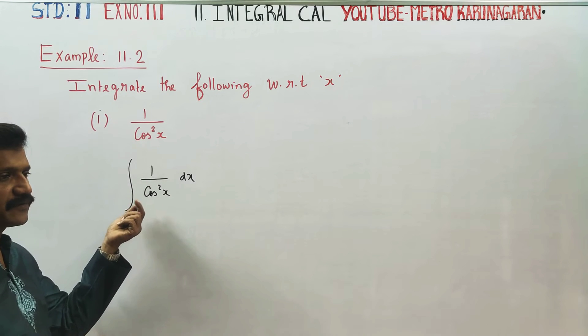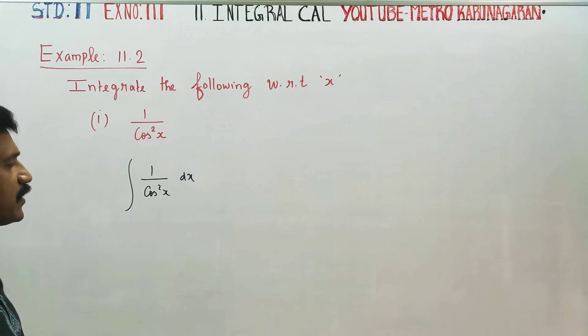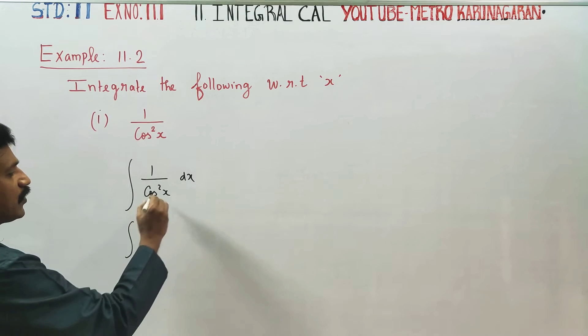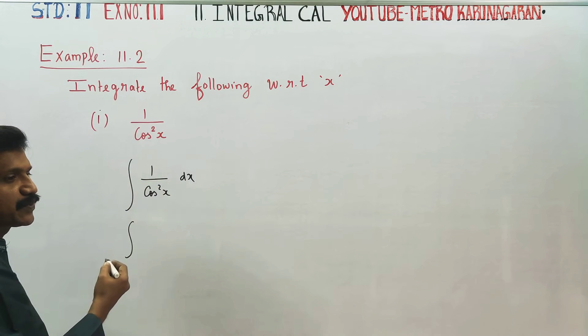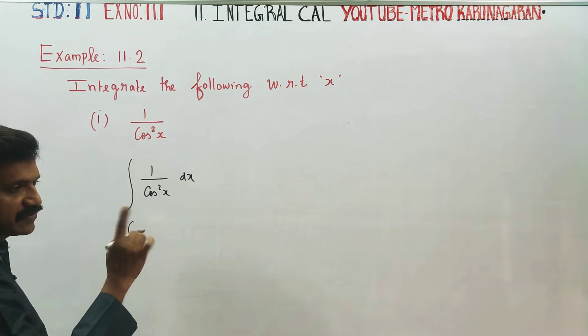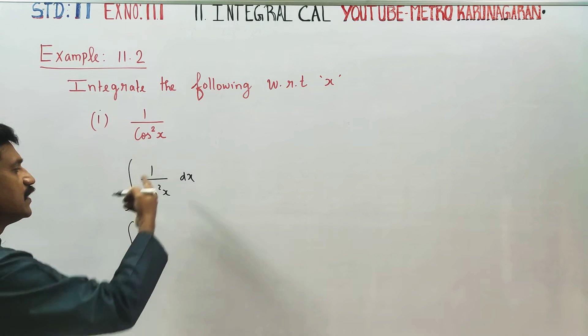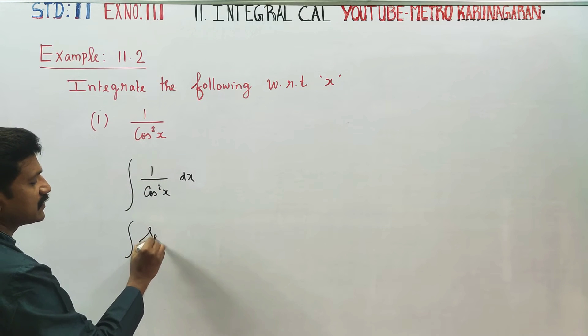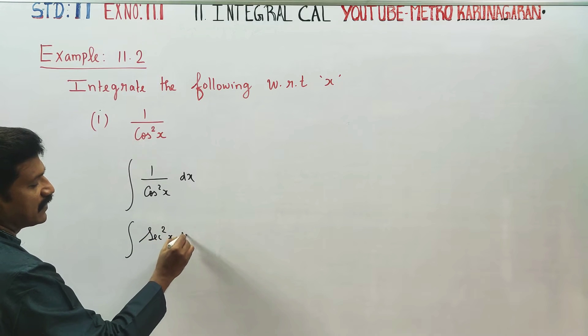Denominator trigonometrical functions are not the maximum numerator. 1 by cos can be written as secant square x dx.